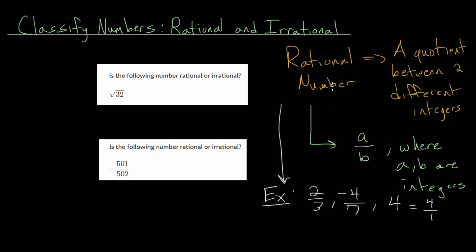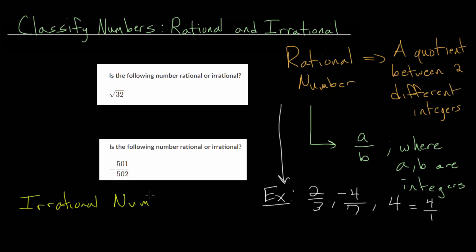So, if rational numbers are fractional numbers, irrational numbers — remember the IR in front essentially just negates the word — these are non-fractional numbers. They are numbers that cannot be written as a fraction. So, an irrational number's definition is that it cannot be written as a fraction.